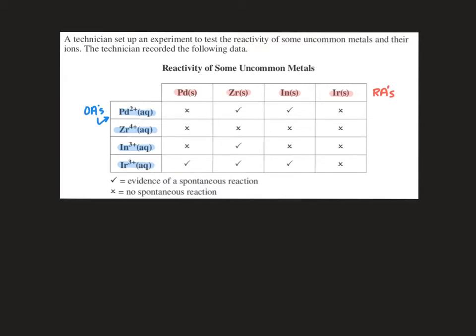In a table like this what we want to look for is the number of reactions that occur. I'm going to look at our oxidizing agents first. If we go from left to right across this table what we'll see is that palladium 2+ has two reactions, zirconium 4+ has zero reactions, indium 3+ has one reaction, and iridium 3+ has three reactions.